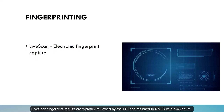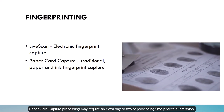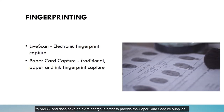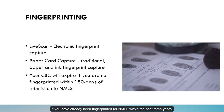In addition to the location, you will be given the option to be fingerprinted using live scan electronic capture or traditional paper card capture. Live scan fingerprint results are typically reviewed by the FBI and returned to NMLS within 48 hours. Paper card capture processing may require an extra day or two of processing time prior to submission to NMLS and does have an extra charge for the paper card capture supplies. Don't forget, you will need to be fingerprinted within 180 days. If you are not fingerprinted within 180 days, you will need to submit a new CBC. If you have already been fingerprinted for NMLS within the past three years, you will not need to be fingerprinted again.